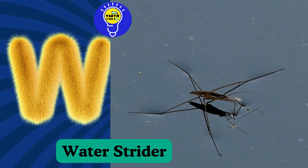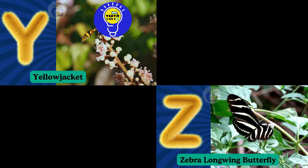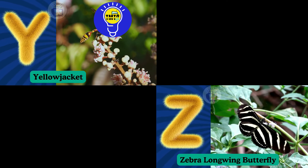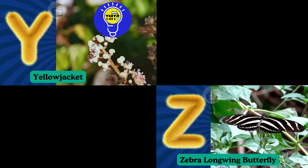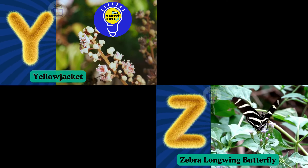Y is for Yellow Jacket. Y, Y. Yellow Jacket. Z is for Zebra Longwing Butterfly. Z, Z. Zebra Longwing Butterfly.